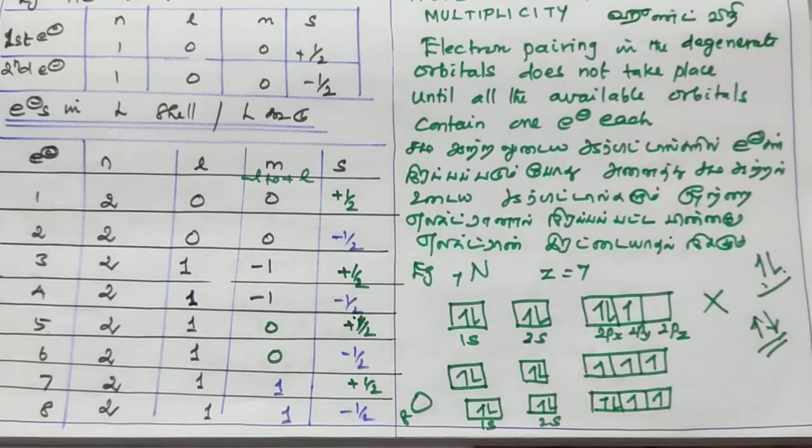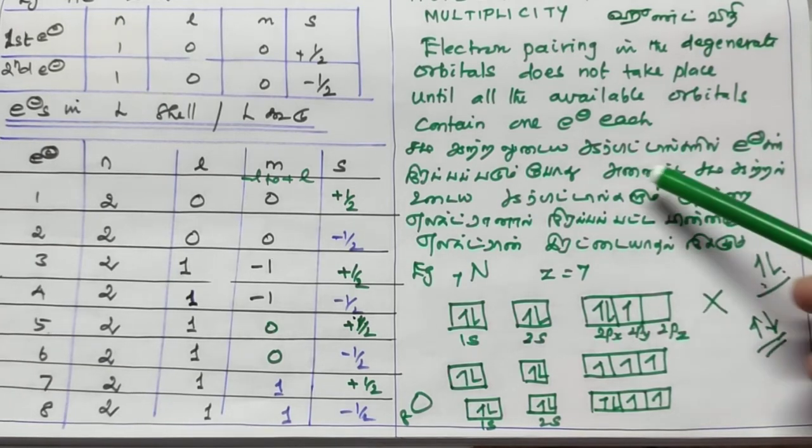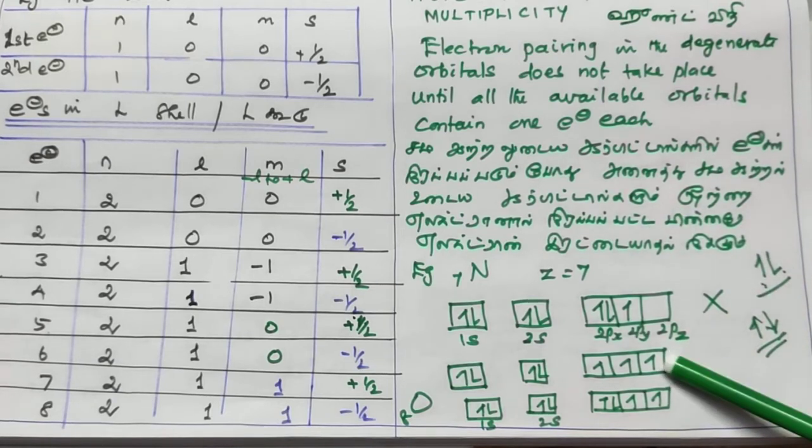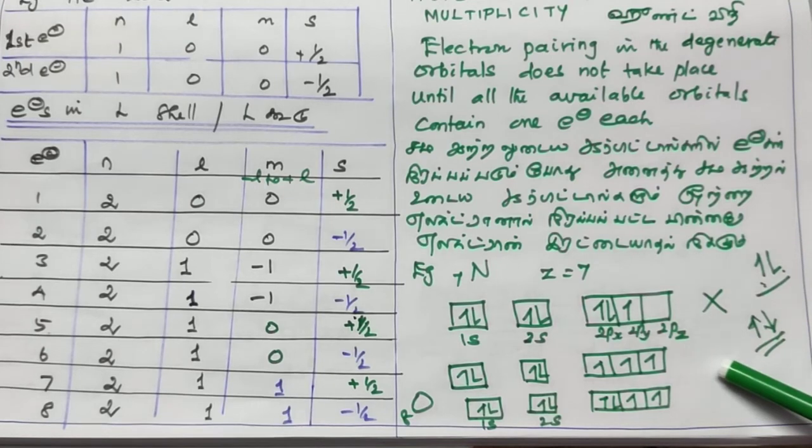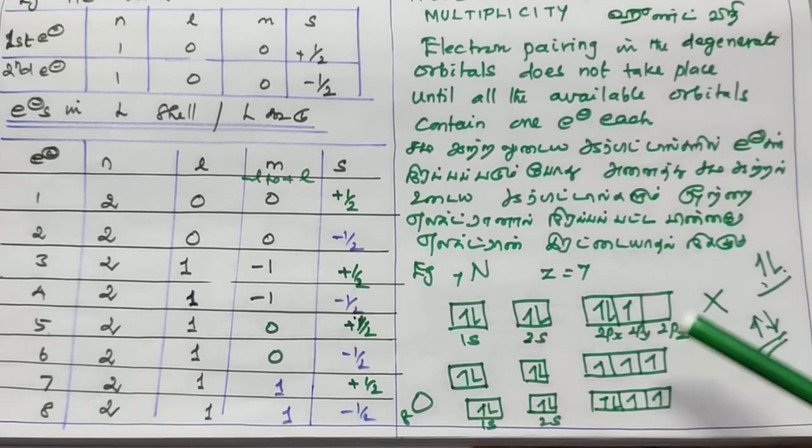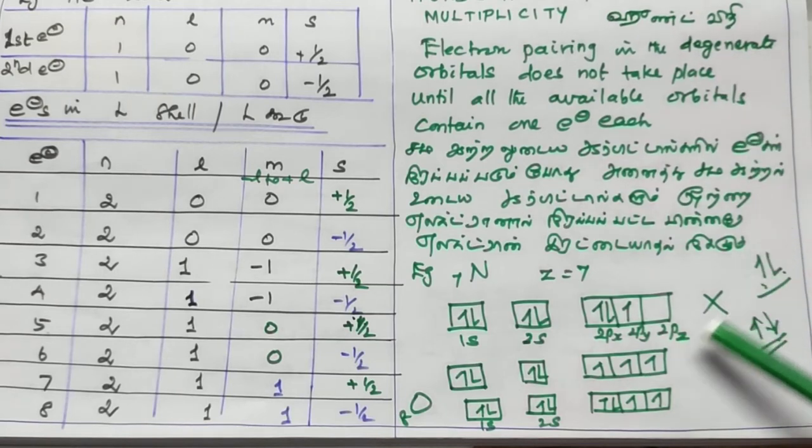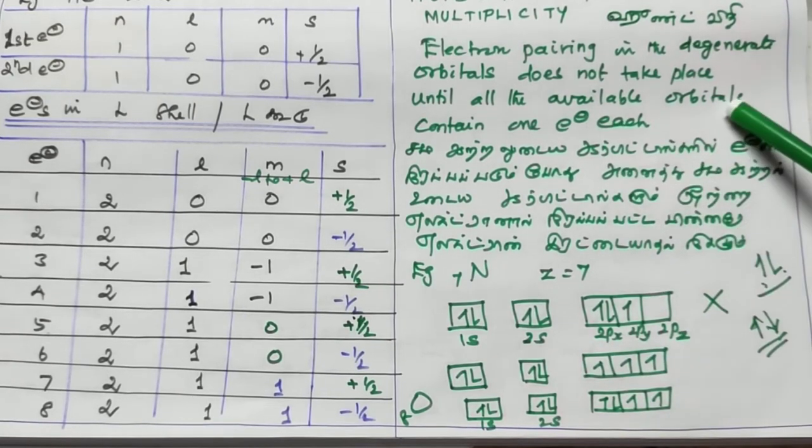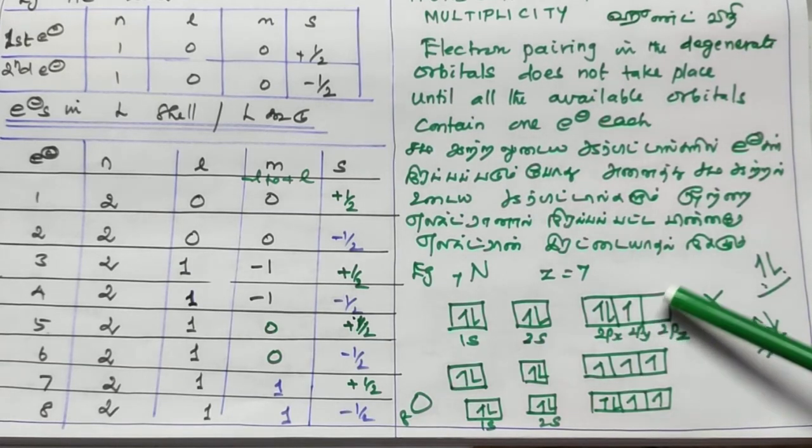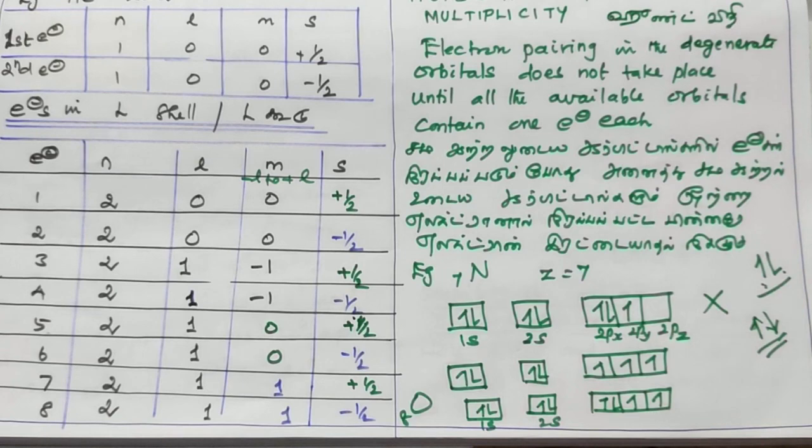One electron's rule of maximum multiplicity. Electron pairing in the degenerate orbitals does not take place until all the available orbitals contain one electron each. So electron pairing in degenerate orbitals does not take place until all the available orbitals contain one electron each. Now, this pairing is correct. Thank you very much.